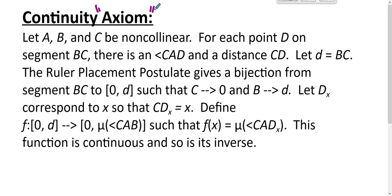We're going to let A, B, and C be non-collinear. For every point D on segment BC, there is an angle CAD and a distance from C to D. We're going to let little d equal the distance from B to C. The ruler placement postulate gives a bijection from the points on line BC to the set of real numbers from 0 to d such that C corresponds to 0 and B corresponds to d.